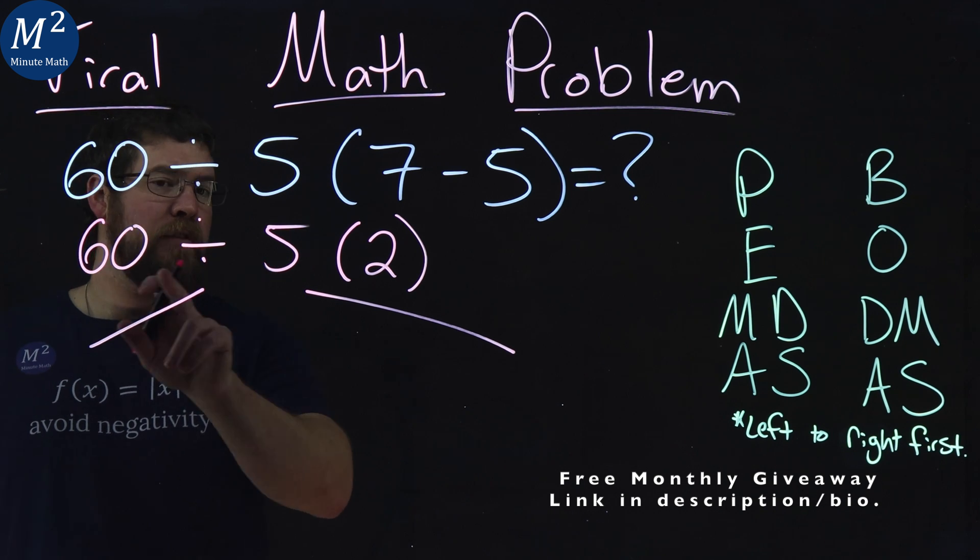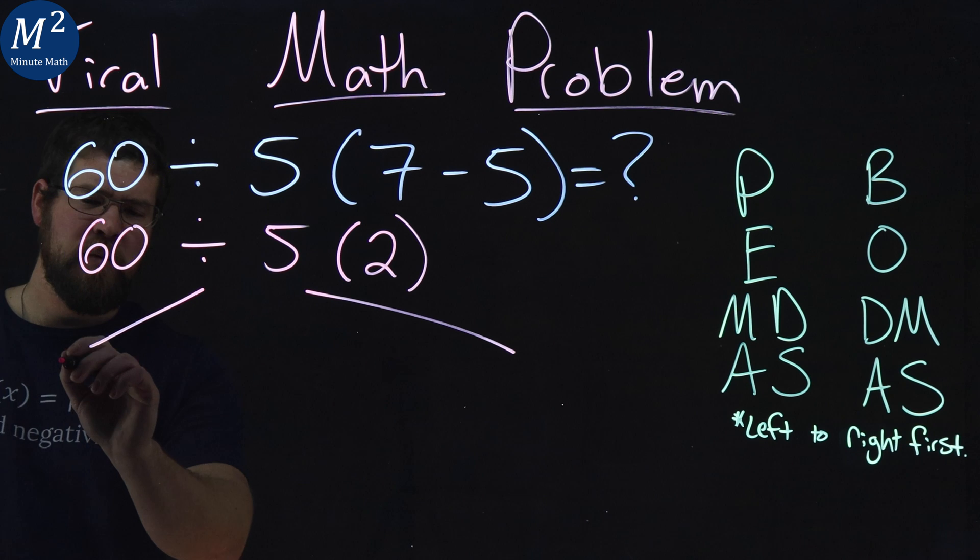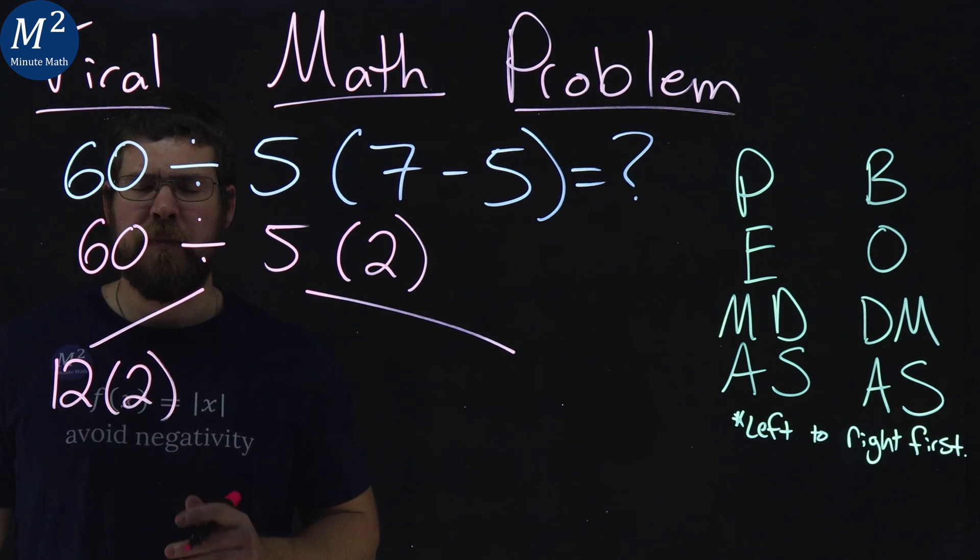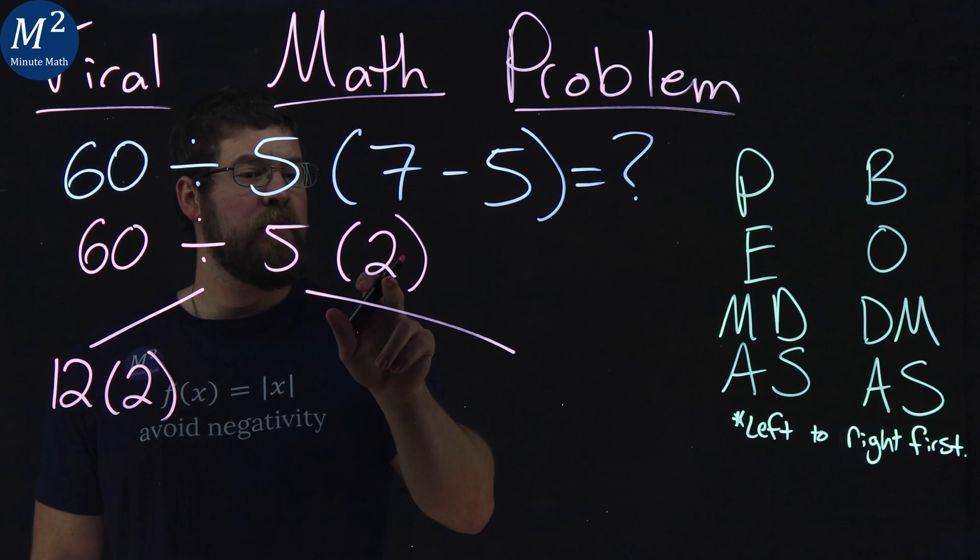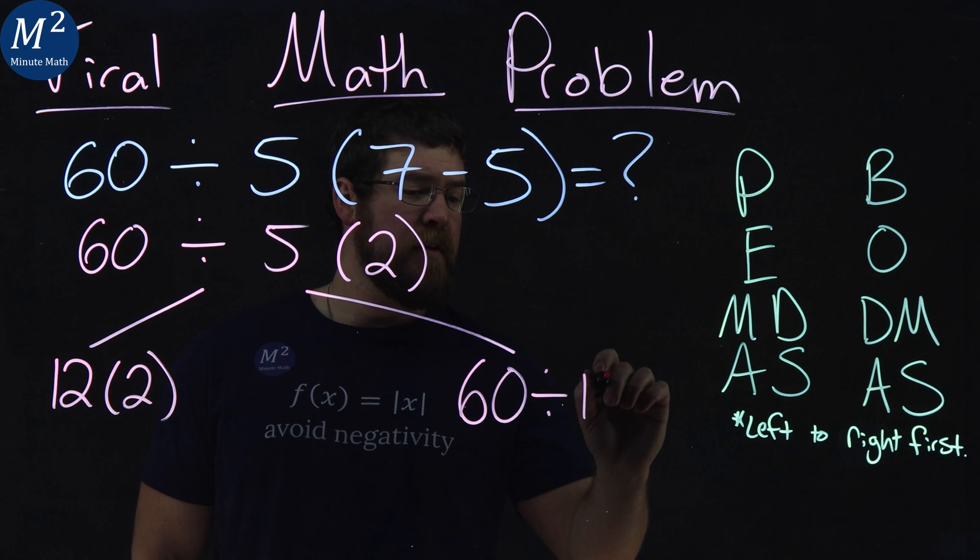So if we do 60 divided by 5, seeing as left to right, 60 divided by 5 comes out to be 12, then we have the 2 right here. If we treat 5 times 2 first, we have 60 divided by, well, 5 times 2 is the 10.